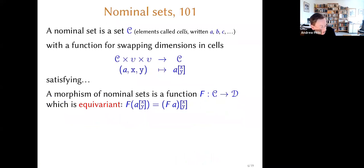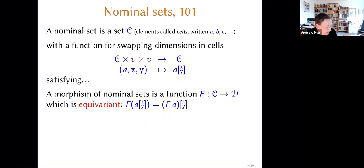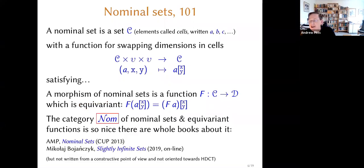So that's the objects. We have a category of nominal sets. A morphism of nominal sets is just a function where you preserve the permutation action — preserve the swapping. So it's a function from C to D where if you apply F to something where you've done a swapping, you could first apply F and then do the swapping. One says 'equivariance' for the property of commuting with a group action. So the morphisms are equivariant functions. We get a category because you can compose equivariant functions and they're still equivariant and the identity function is equivariant. I'll call that category Nom — nominal sets.